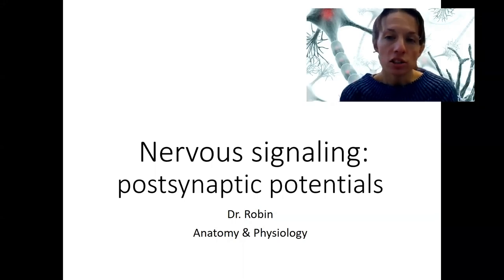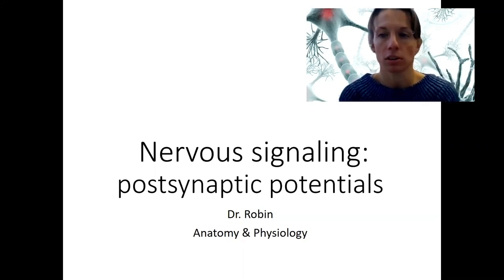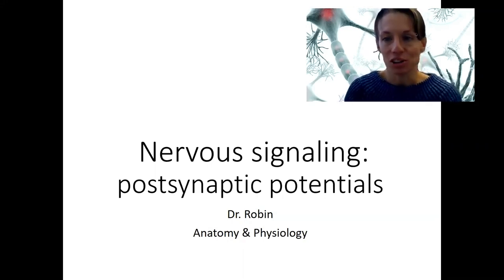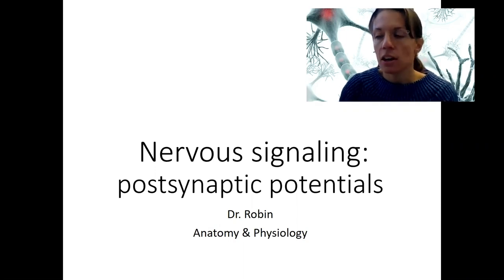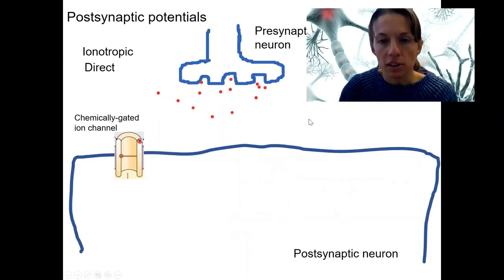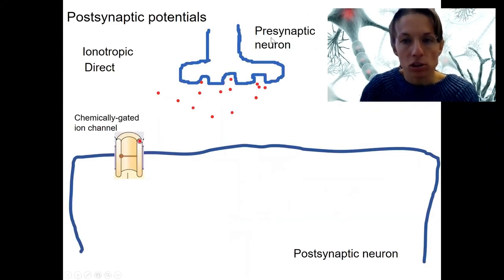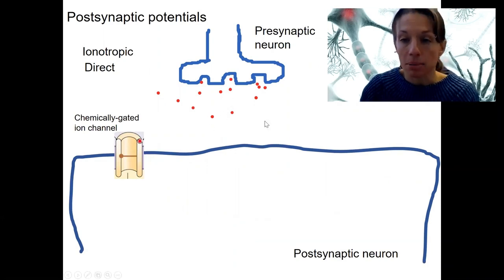Postsynaptic potentials are changes in membrane potential in the postsynaptic neuron. One neuron talking to the other is going to change membrane potential, which causes that signal to be transmitted from one cell to the next. Going back to the picture from the previous lecture, we have a presynaptic neuron releasing neurotransmitter — chemical messengers — into the synaptic cleft, where a postsynaptic neuron receives those signals.